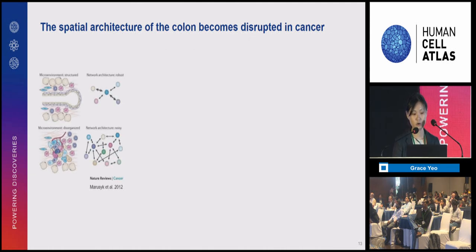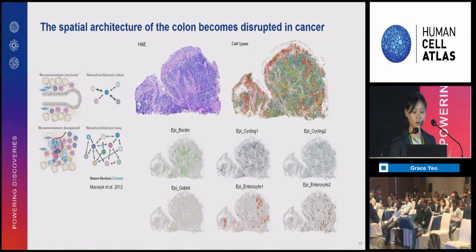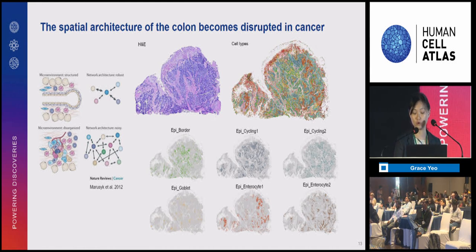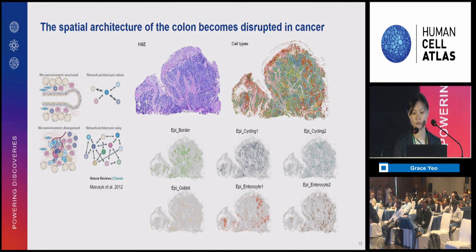In contrast, in colon cancer, this structured architecture becomes completely disorganized, and the signaling pathway that maintains homeostasis and regeneration becomes very noisy and fuzzy. We can also see this qualitatively in our data. When we project the analogous cell types back, we've lost all of the nice architecture present in the normal colon. At the same time, the spatial distribution of these epithelial subtypes is still non-random, so the question becomes: how do we actually quantify and describe this?